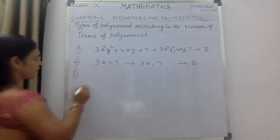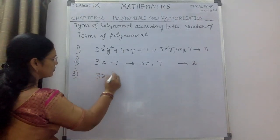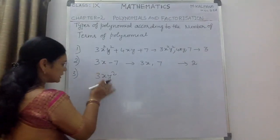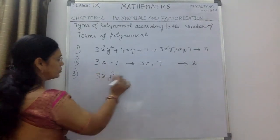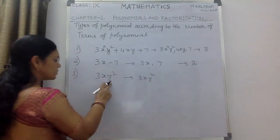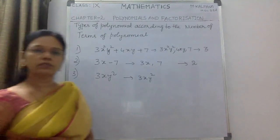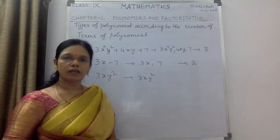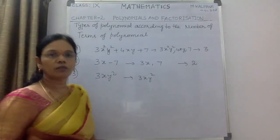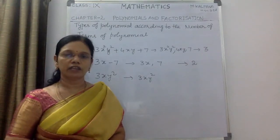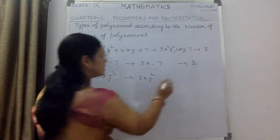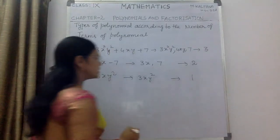I am going to take another polynomial: 3xy². So this is only one term involved in this particular polynomial, that is 3xy², because this is not separated by any plus or minus. We know the terms which are separated by plus or minus symbols are the terms of that particular polynomial. With multiplication and division, we cannot separate the polynomial. So we can say 3xy² is only a single term — the number of terms is 1.